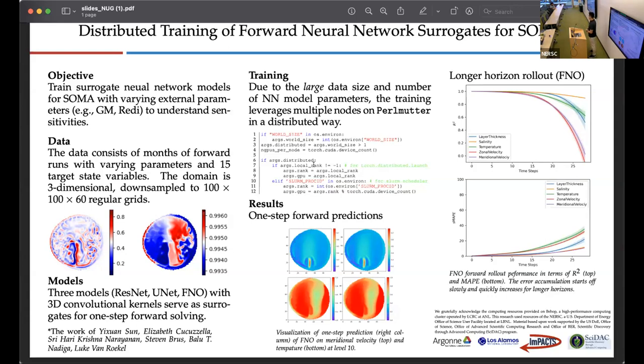We got pretty impressive results from all three models for one-step forward predictions. In the plots, the left column is the true state variable field, and the right column is the model predicted ones.